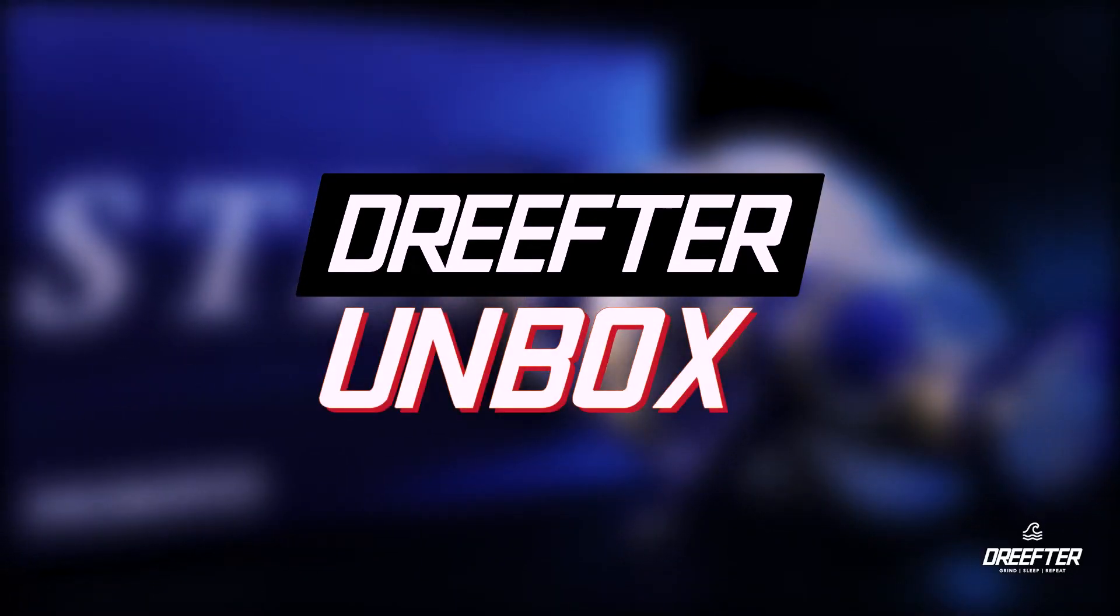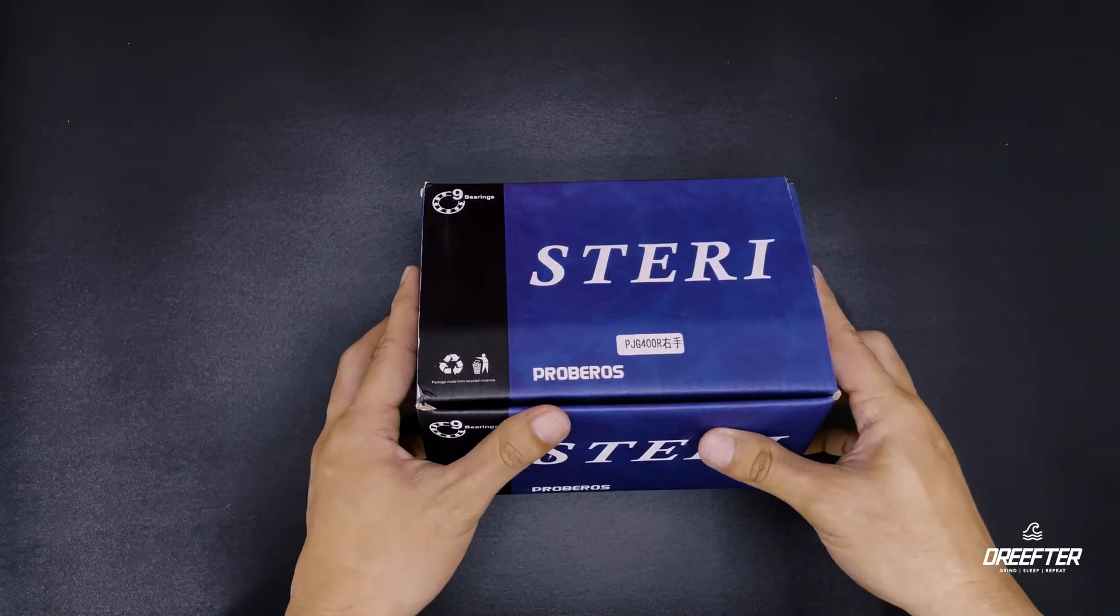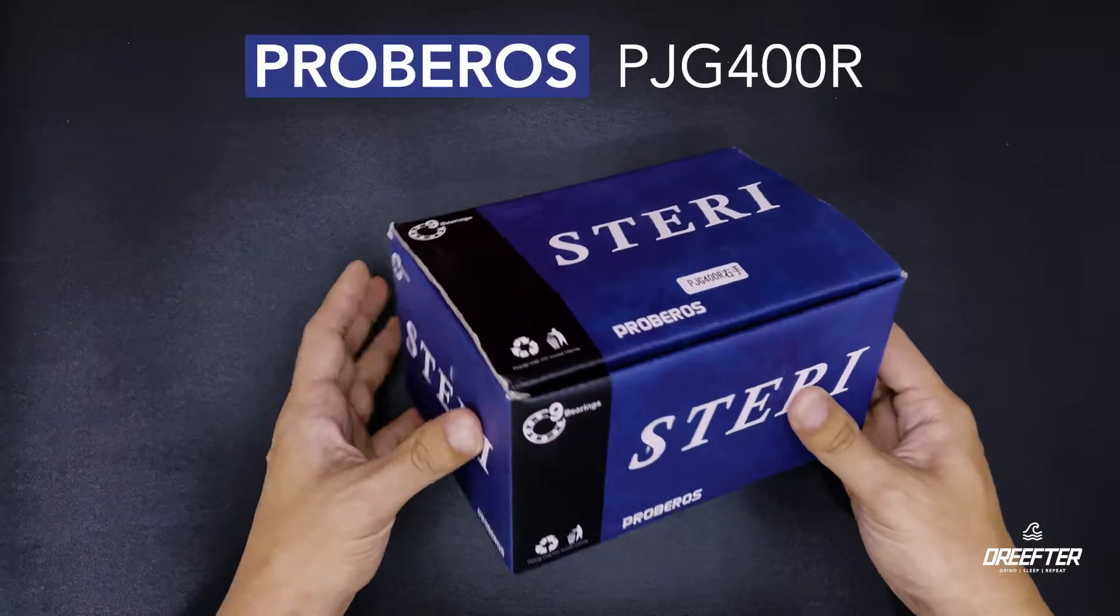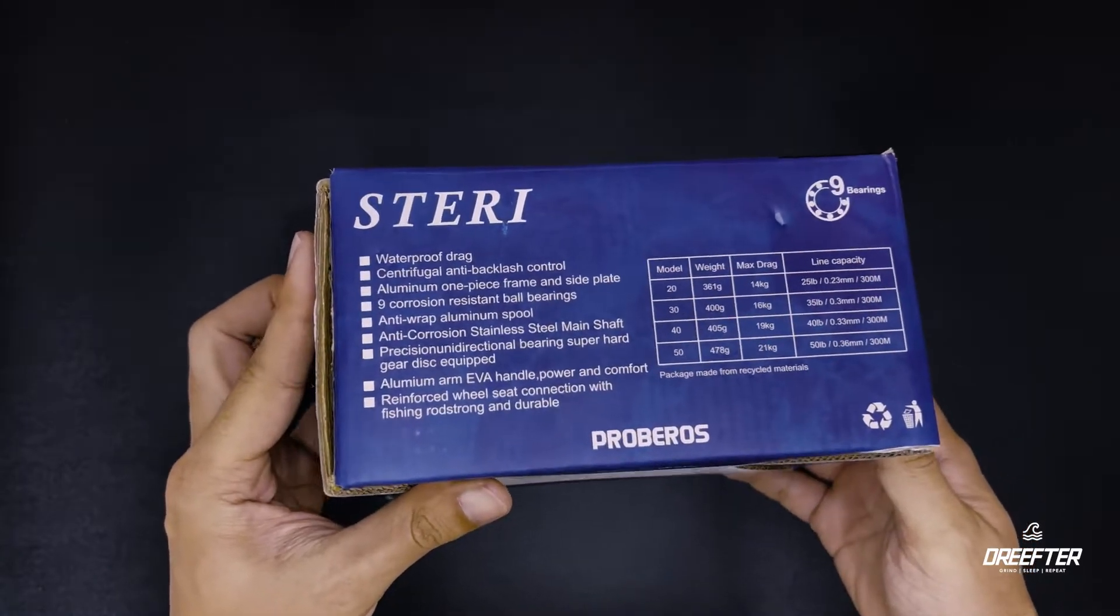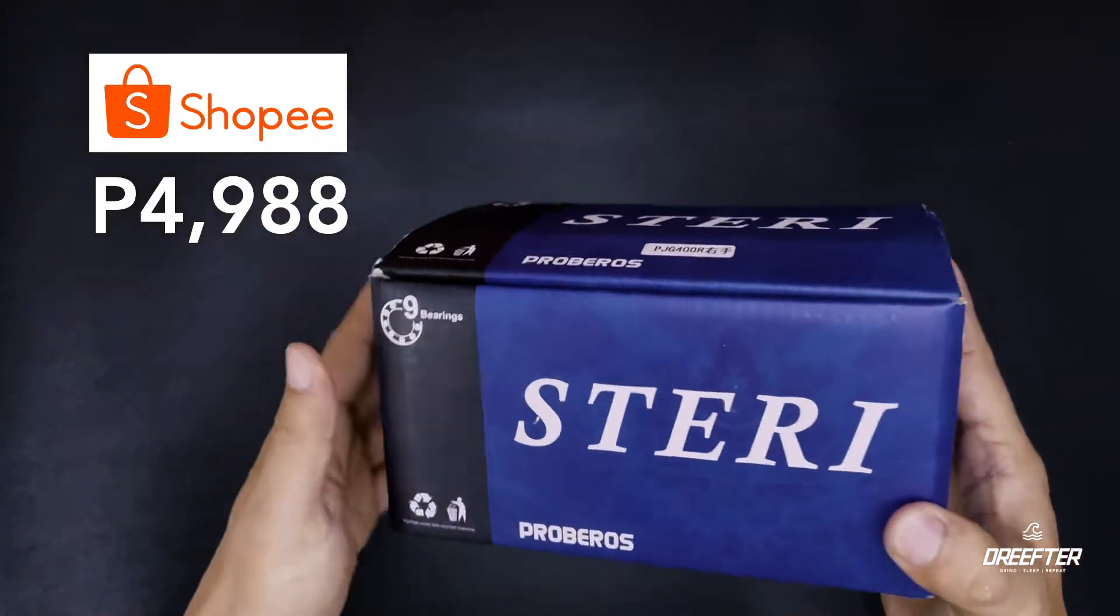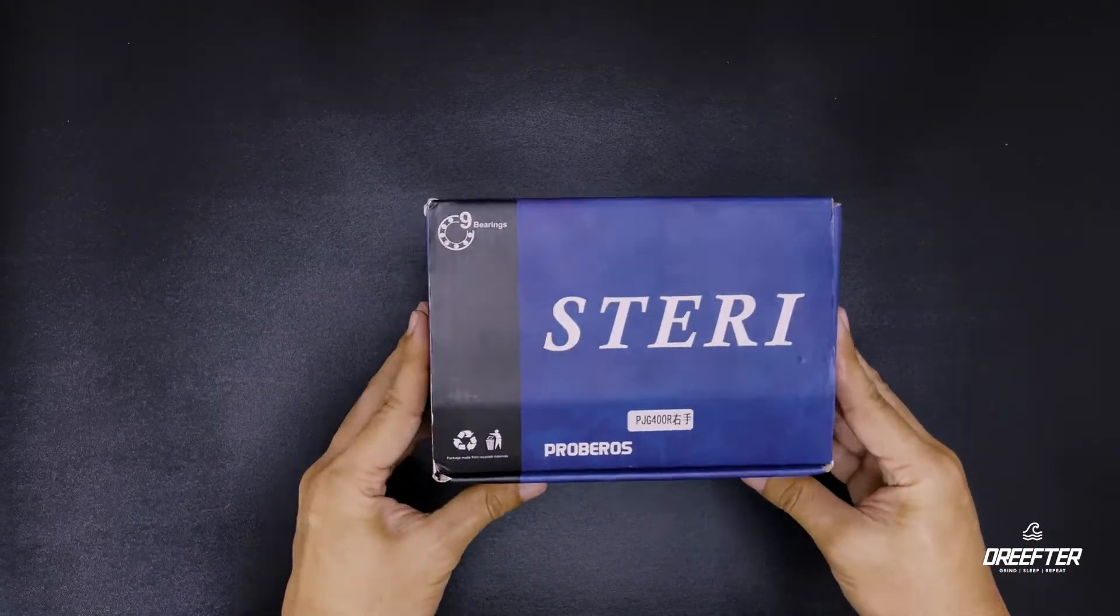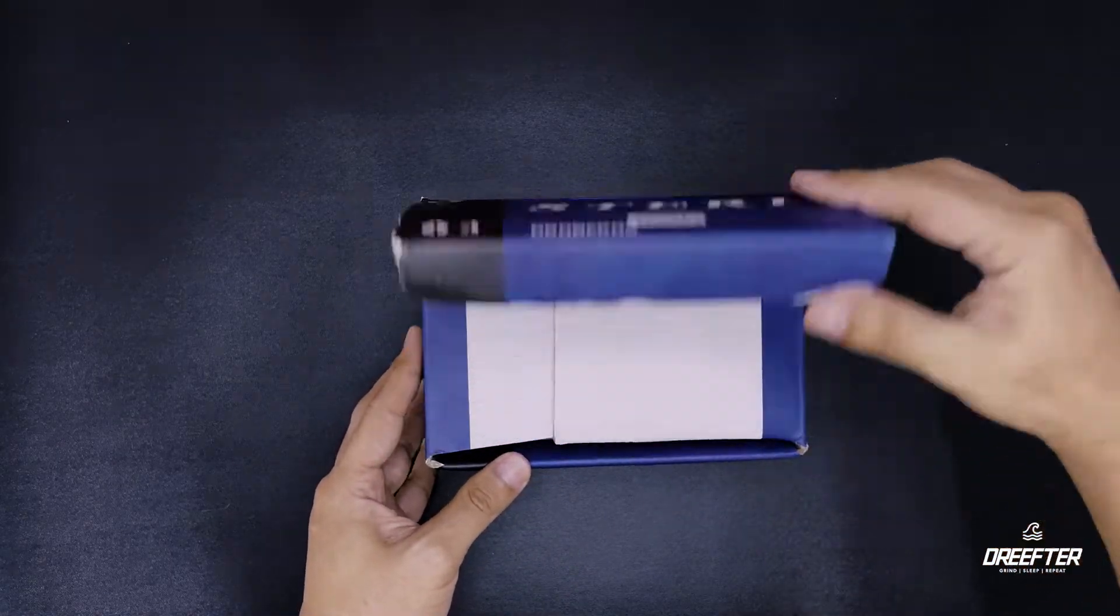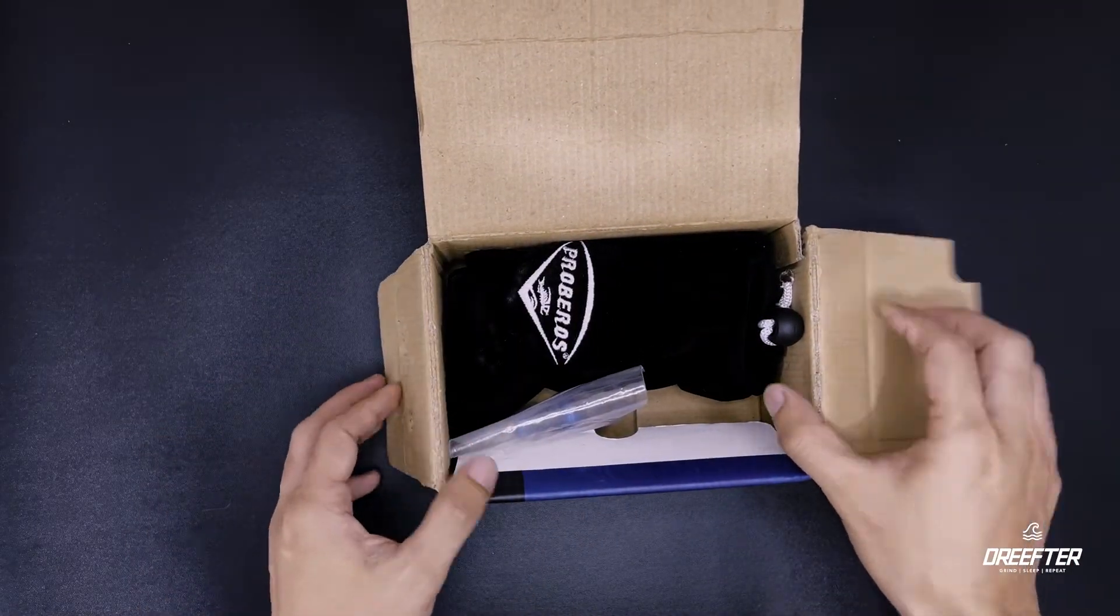Hey guys, so today we will be doing a budget friendly overhead jigging set. First we will be unboxing the new Gruberos PJG 400R. So nabili ko to sa Shopee sa halagang 4,988. Considering it's an overhead reel, napakamura na ng price na ito kasi usually yung mga other brands naglalaro sa halagang 10,000 patas, so budget friendly na ito for overhead reels.